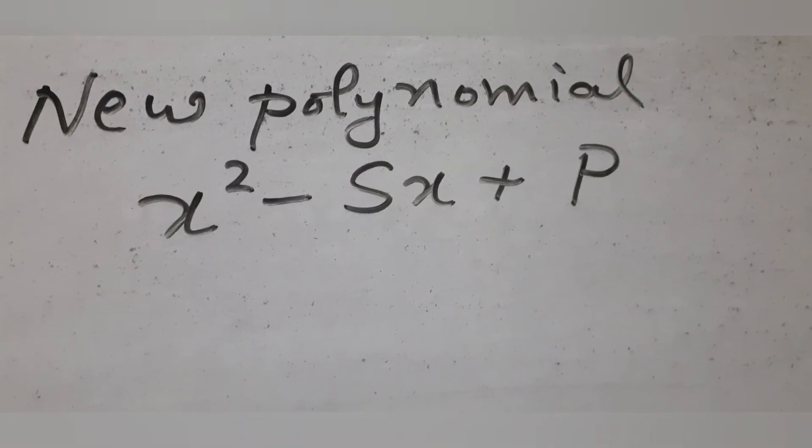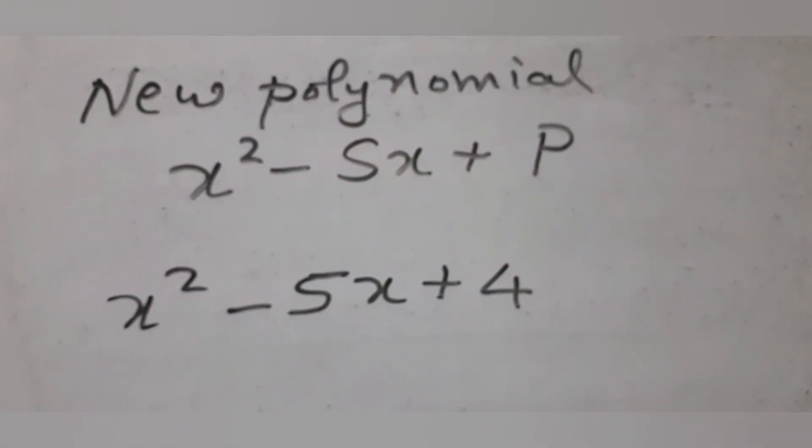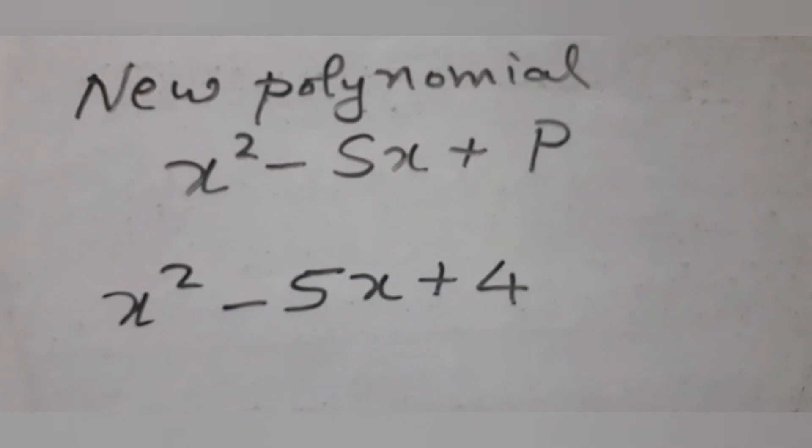Substitute these values into the expression for a quadratic polynomial x square minus s into x plus p, so that you get x square minus 5x plus 4.